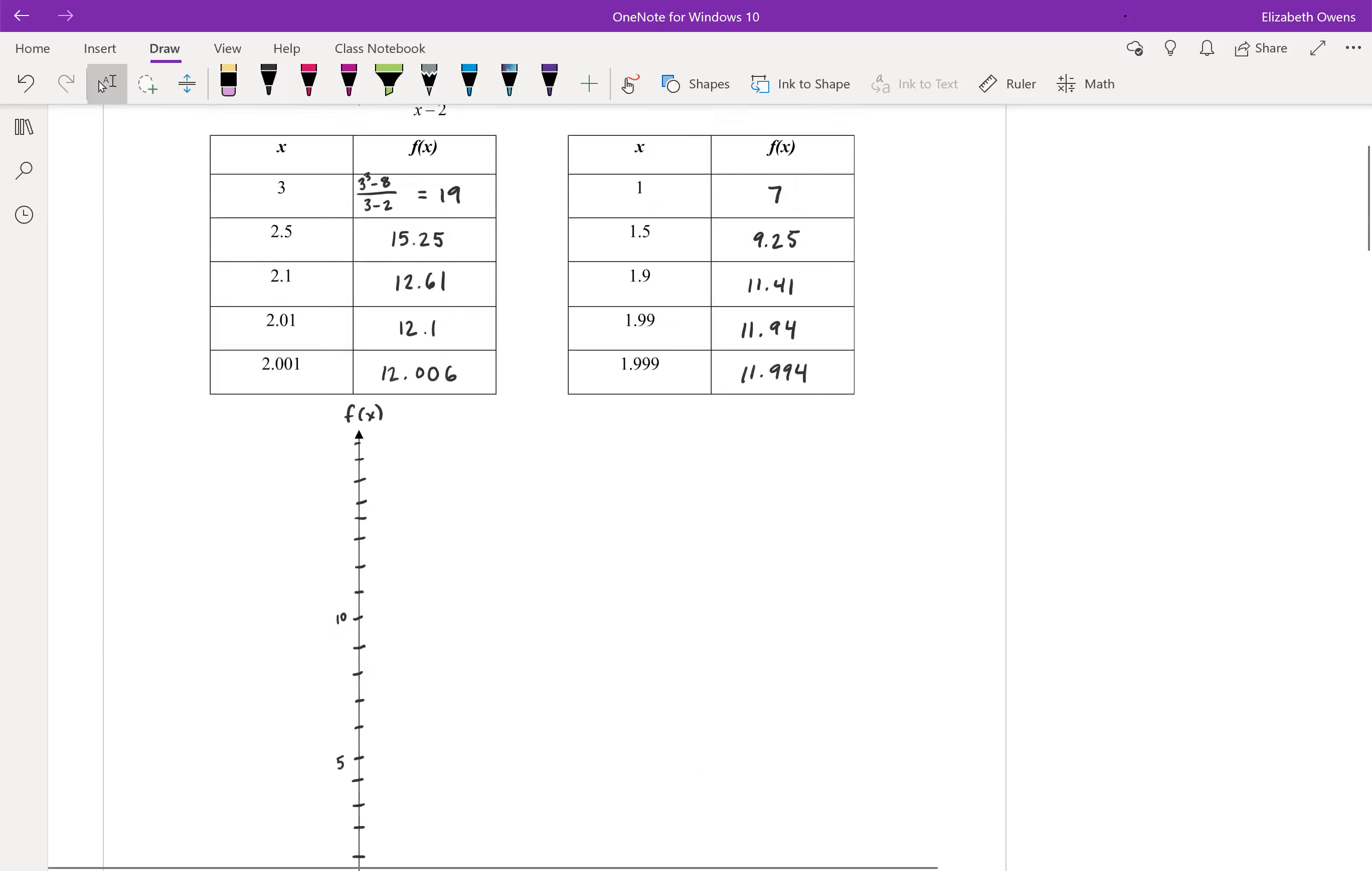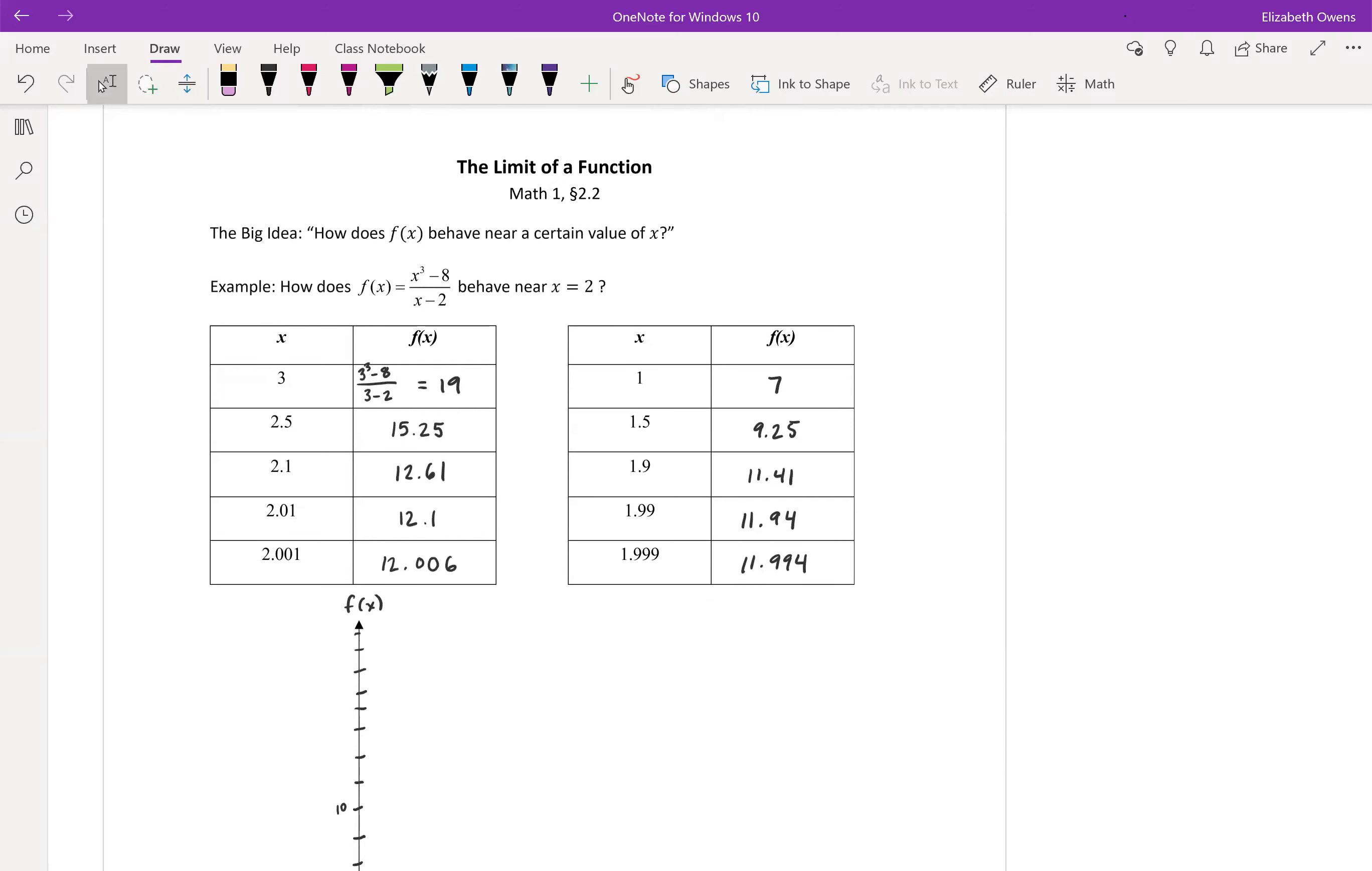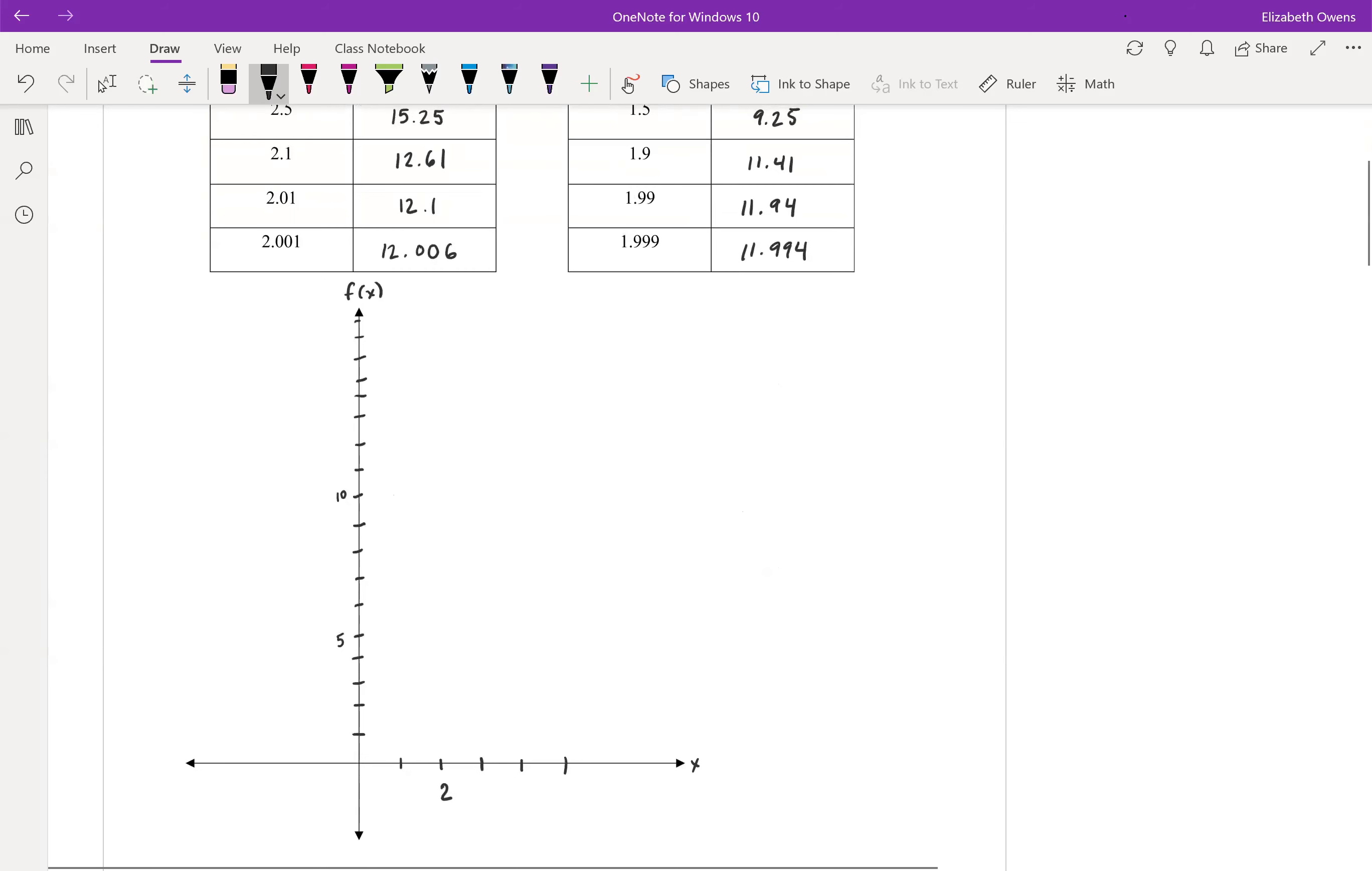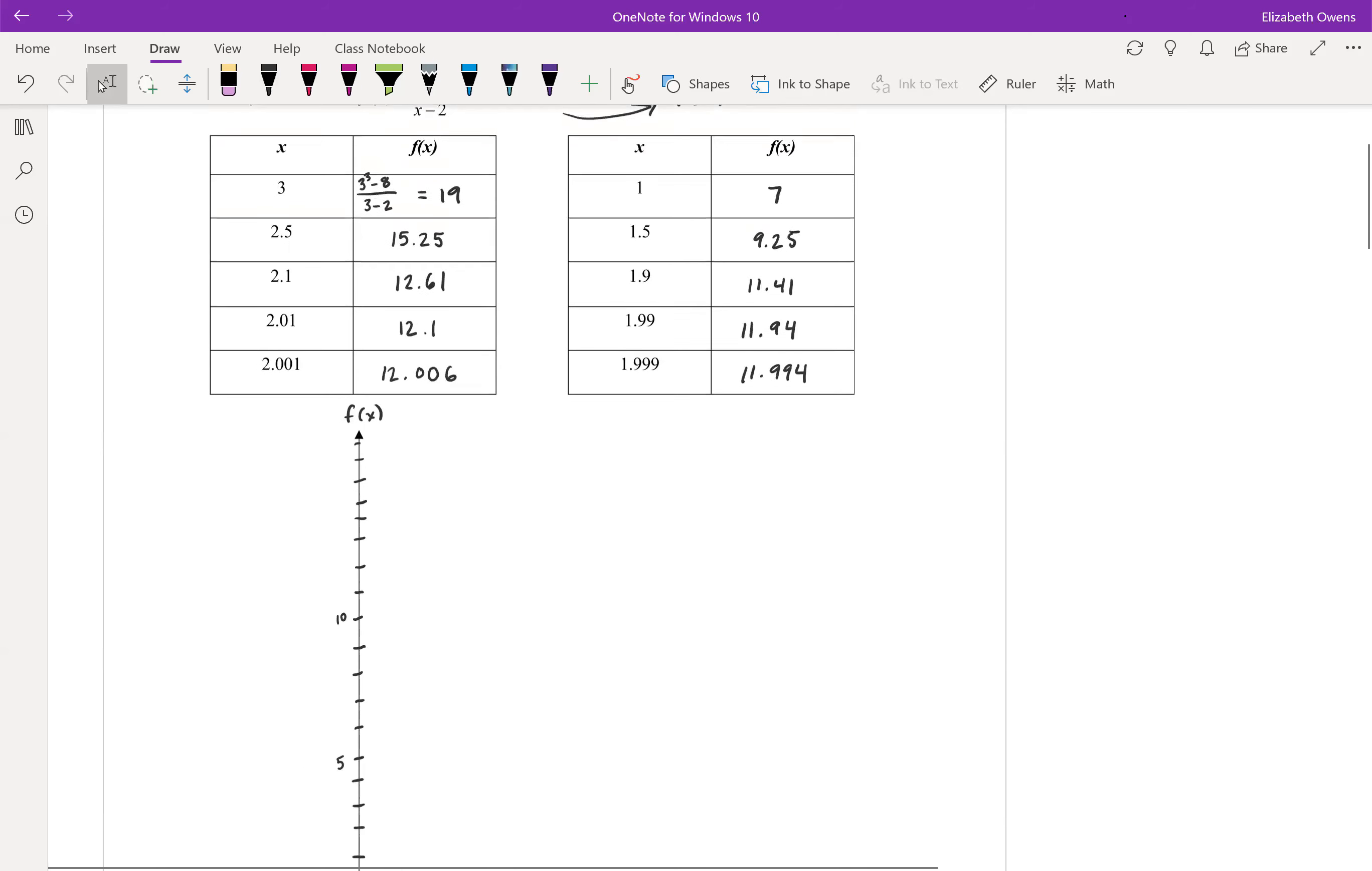Now remember, first things first, we couldn't actually plug in x equals 2. All right, because f of 2 is undefined. Okay, so we don't want to put a point where x equals 2 on our graph. All right, that would look like we want to put a hole in the graph right there, but we don't really know maybe where to put that hole entirely.